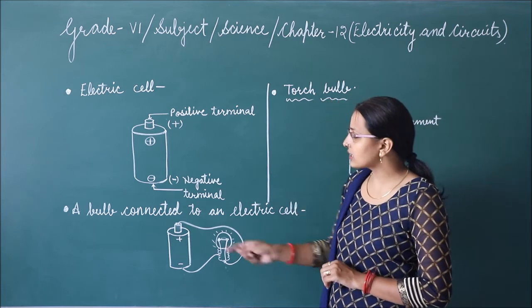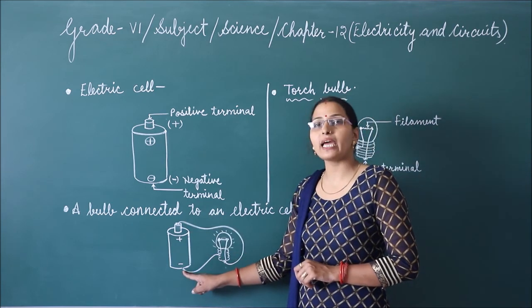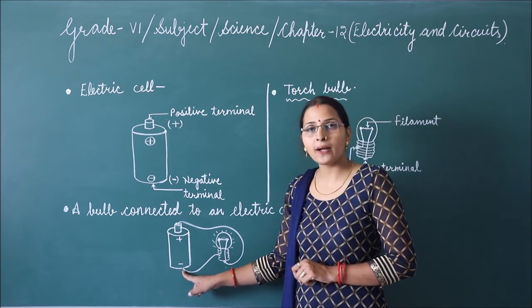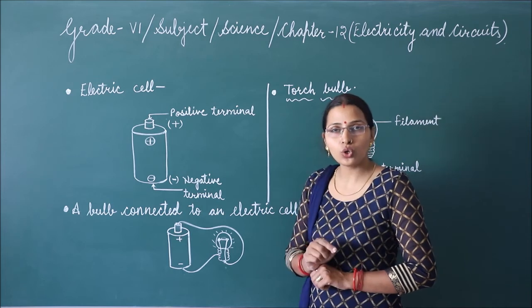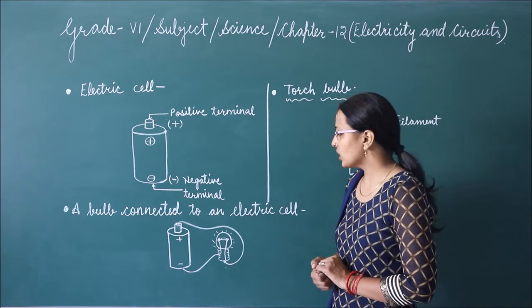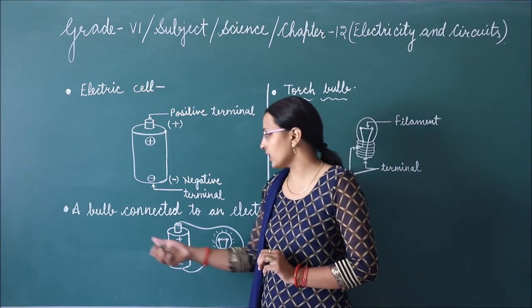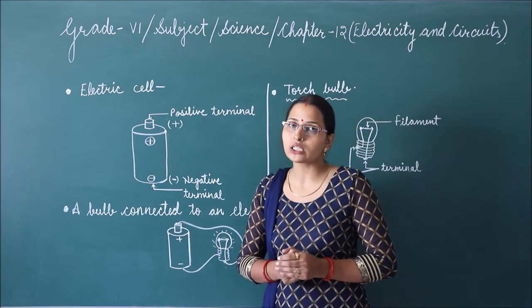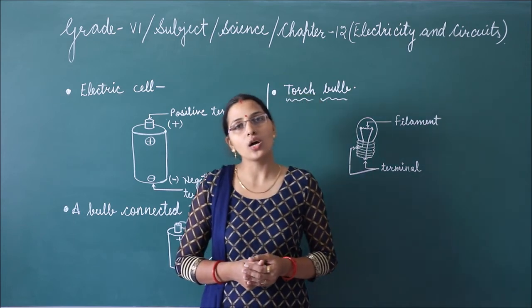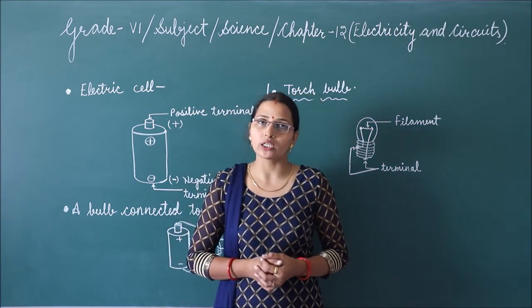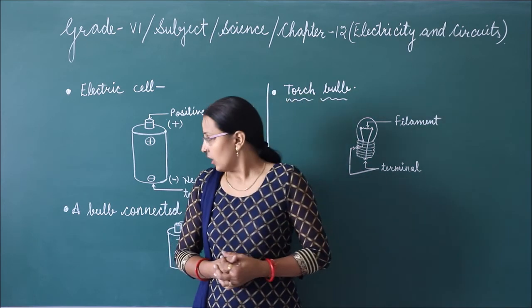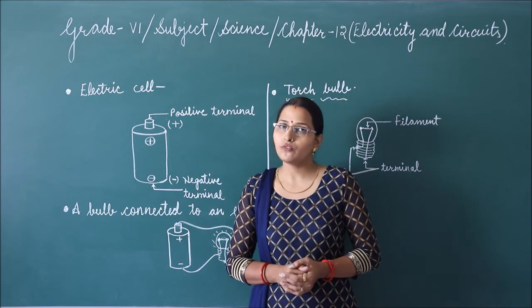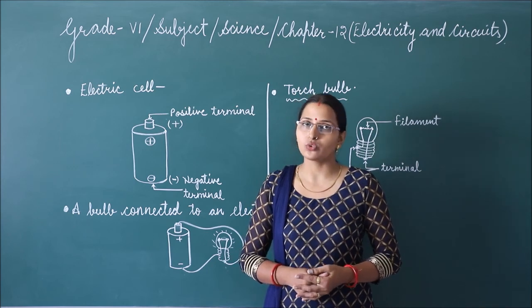If you connect both wires to one side, the bulb will not glow — you must not lose connections. Take care of these things. With the electric cell, you can connect the bulb, and then the bulb will start to glow. Students, I think you have understood everything. If you have any doubt, you can contact me. Thank you.